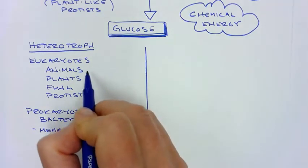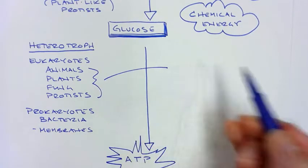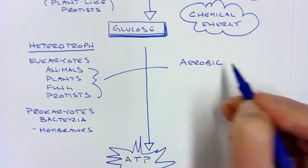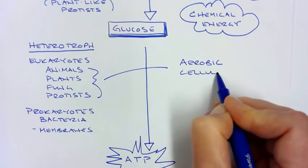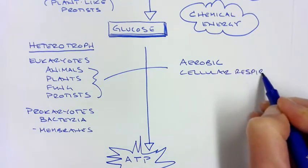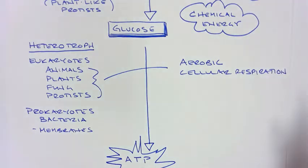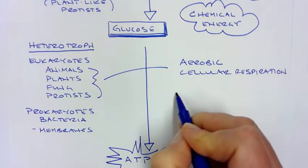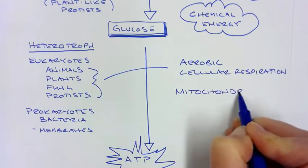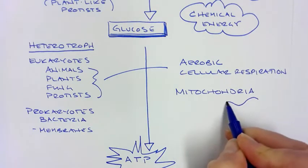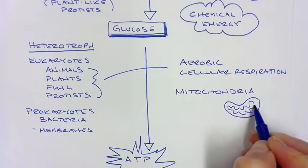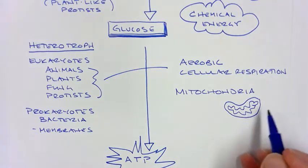So let's go back to our eukaryotes up here. These guys do a process called aerobic, or sometimes called cellular respiration. This takes place in the mighty mitochondria, the powerhouse of the cell. Again, mitochondria are kind of a jelly bean shape with another membrane on the inside, and it takes place across these membranes.